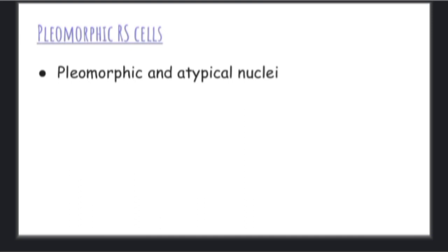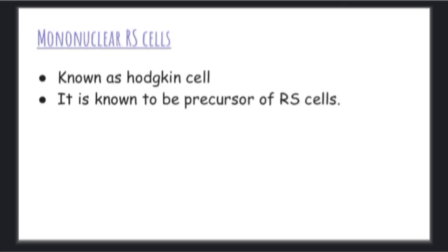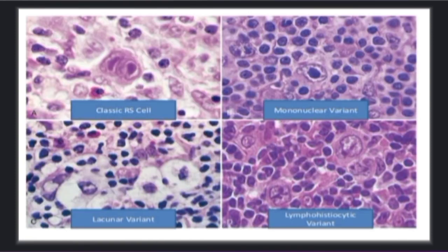The fourth type is pleomorphic RS cells. These cells have atypical nuclei. The last type is mononuclear RS cells, known as Hodgkin cells. It is known to be the precursor of the RS cell. Now let's see the histopathological slides. In the first slide, we can clearly see the owl-eye appearance cells.